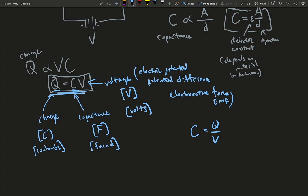This allows us to define the unit of capacitance, the farad, F, as the unit defined by a coulomb divided by a volt.